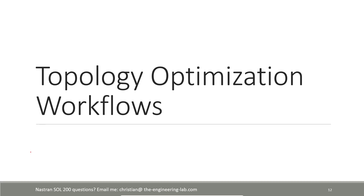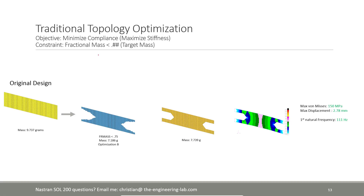While Nastran is running, let me go through some slides regarding topology optimization workflows. What we are doing today is known as the traditional topology optimization approach. The objective is to minimize the compliance — this is analogous to maximizing the stiffness. Our constraint is to ensure that the final mass is under a certain mass target. In this example, the mass target is 0.3, meaning the final design should be 30% of the original mass.